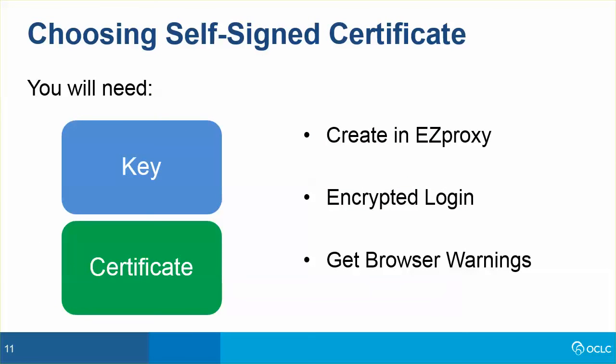If you choose to use a self-signed certificate, you will need a key and a certificate. You create the public and private keys and the self-signed certificate from your EasyProxy administration page found under Manage SSL Certificates. EasyProxy will create the key and the certificate files and store them in the SSL folder in your EasyProxy directory. If you add a self-signed SSL certificate to your EasyProxy server and a force HTTPS login directive to your config.txt file, users will be required to log in to EasyProxy with a secure HTTPS login page, meaning their login information will be encrypted when passed across the internet.